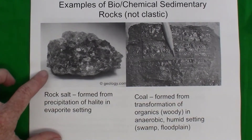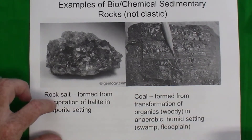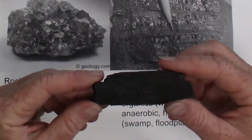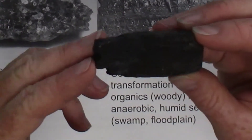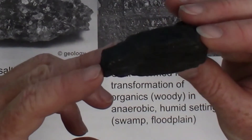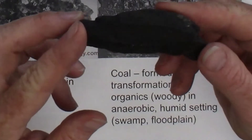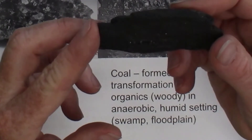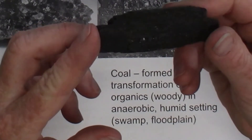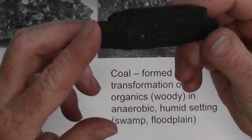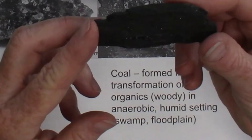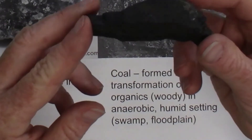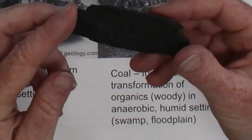Rock salt forms from the precipitation of the mineral halite in an arid setting. Coal forms when a large amount of woody debris accumulates in an area but does not decompose quickly — typically in a swamp, wetlands, or floodplain where wood debris gets buried in silt and water with little oxygen. Over time, the woody debris is buried deeper and other compounds are driven off, leaving a high concentration of carbon. This is coal, an organic sedimentary rock.